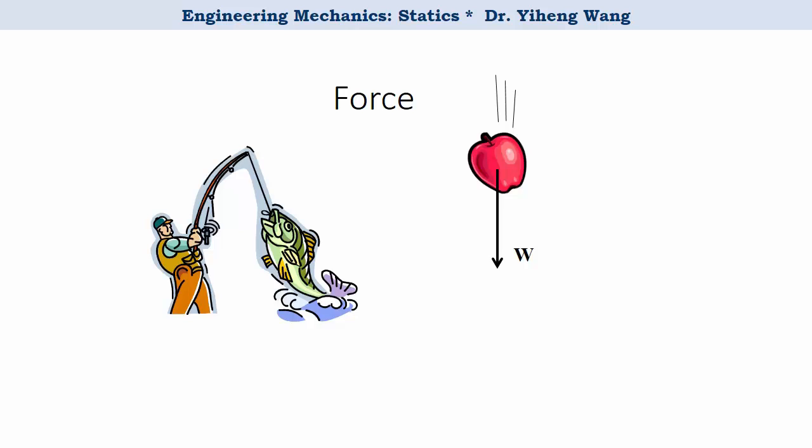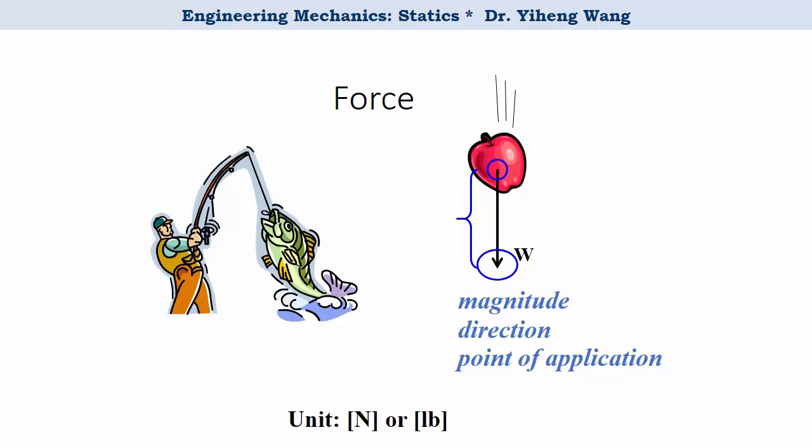Force is a vector, and it is fully described by magnitude, direction, and point of application. In SI system, the unit of force is given in newtons, while in the US customary system, its unit is given in pounds.